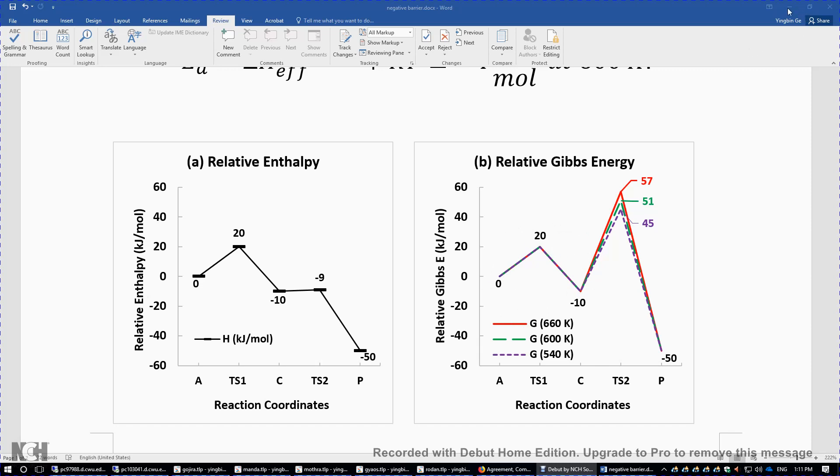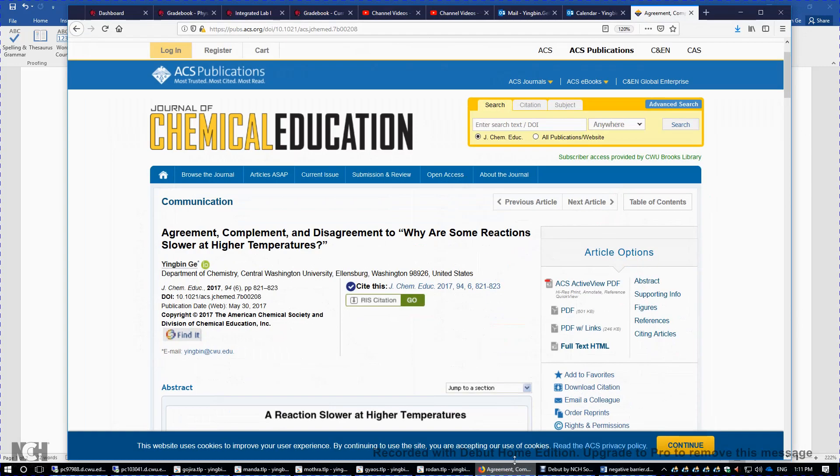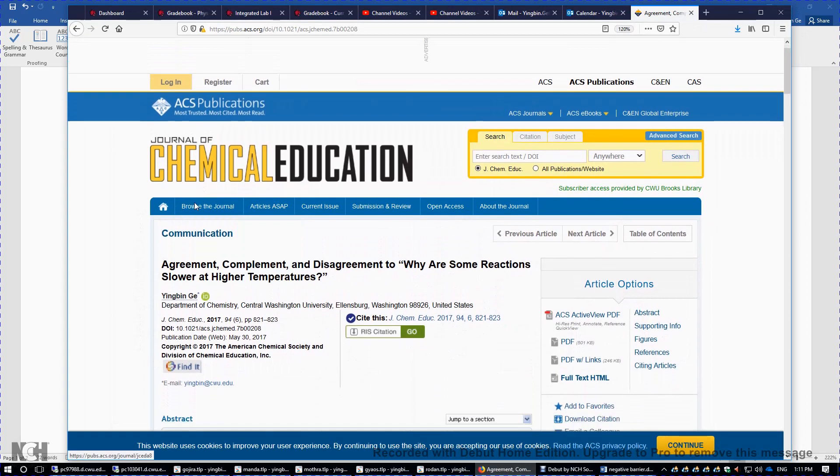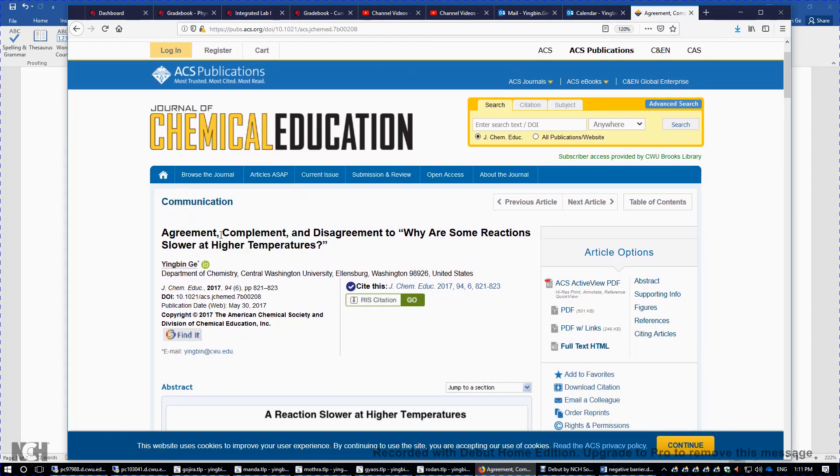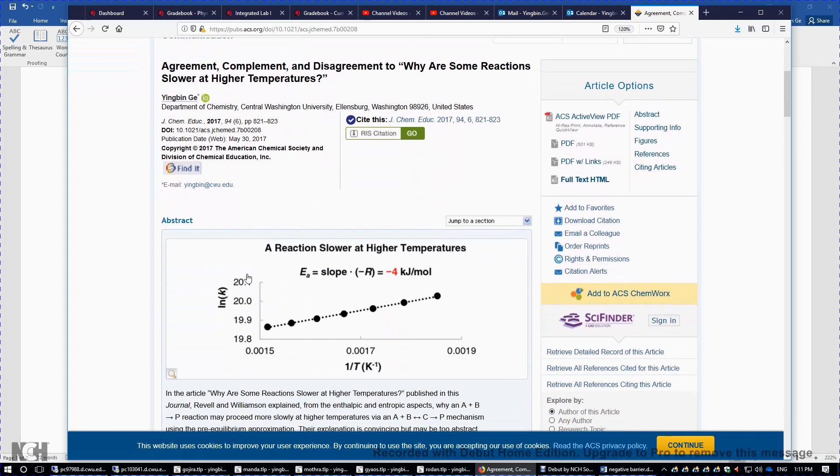For a more detailed explanation, I would like you to consider reading this Journal of Chemical Education paper. Here's the title and this is the graphical abstract. I'm using a temperature roughly around 600 Kelvin. From left to right, you can see the temperature decreases and the reaction rate increases as temperature decreases. Using the numbers on this graph, we obtain the slope multiplied by negative R, giving us -4 kilojoules per mole as the activation energy.